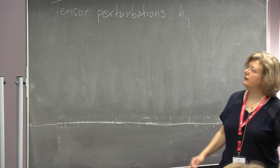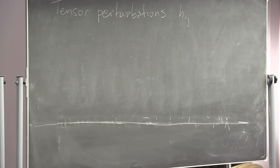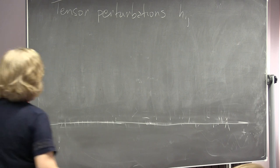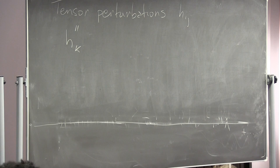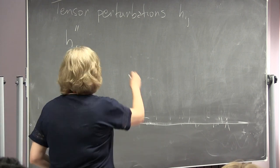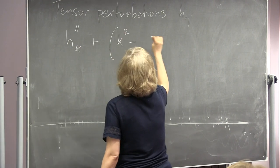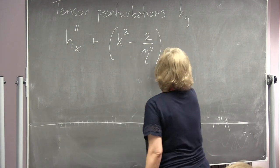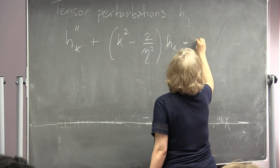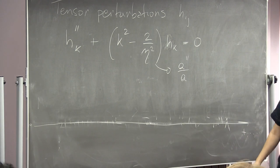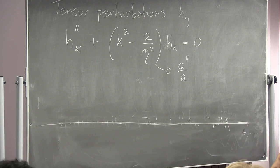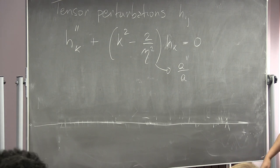For each polarization, you can write an equation of the form with a k squared minus 2 over eta squared term, where eta is the conformal time, and H of k equals 0. This is nothing else as a double dot over A. In this case you have again a similar solution to what we discussed yesterday, because this is also a massless field — only it is not a scalar, it is a tensor — but it is a massless field in the background of an expanding universe. The source of the fluctuation, as in the case of the inflaton, is again the vacuum fluctuations. So I would expect H to have a vacuum fluctuation in the same way as delta phi had.